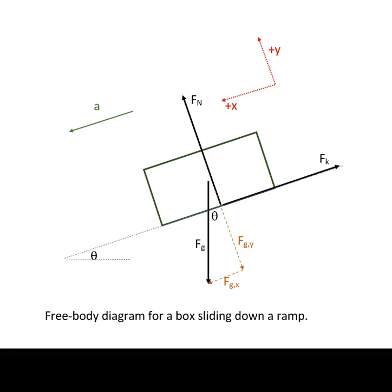Note that in this case, the acute angle between the normal force and the gravitational force is the same angle as that of the ramp. Hence, in this case, the x component of the gravitational force is the sine component, and the y component of the gravitational force is the cosine component.